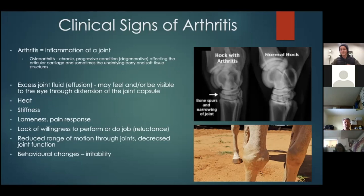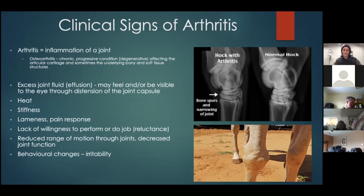End-stage joints that have fully lost their cartilage layer may not produce any fluid at all, because the synoviocytes responsible for that production are gone — we've worn through them. Too much fluid is probably not a good sign, but no fluid at all when attempting an intraarticular injection may also not be a good sign — think of the three bears: you want somewhere in the middle.